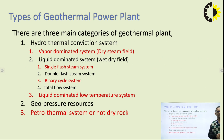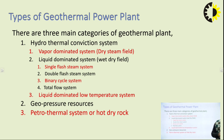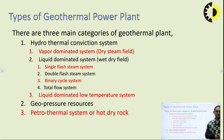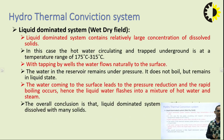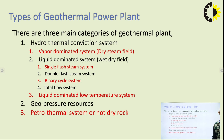There are three main categories of geothermal plants. First is the hydrothermal convective plant, which includes vapor dominated systems (dry steam field) and liquid dominated systems (wet field) — with four sub-categories: single flash, double flash, binary cycle, and total flow systems — plus liquid dominated low temperature systems. Second is geopressurized resources. Third is petrothermal systems, also known as hot dry rock.